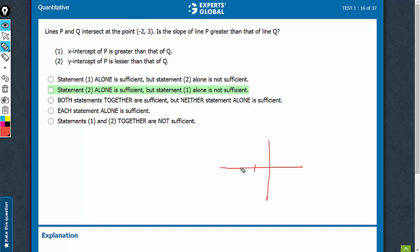Lines p and q are intersecting at a point. So somewhere here is where the lines p and q are intersecting. Is the slope of line p greater than that of line q?